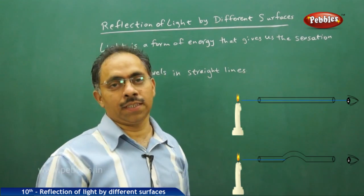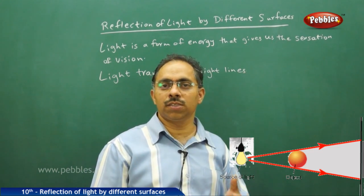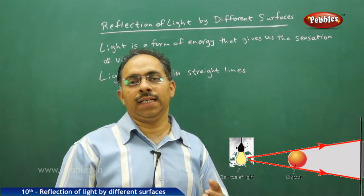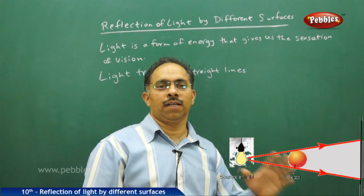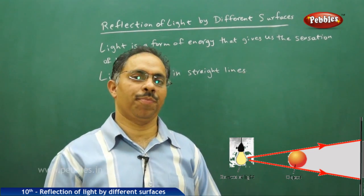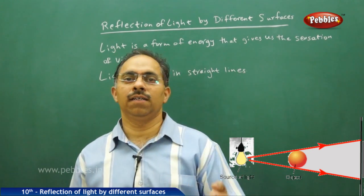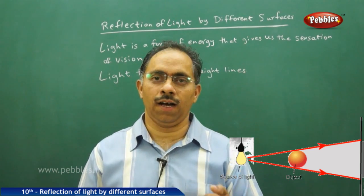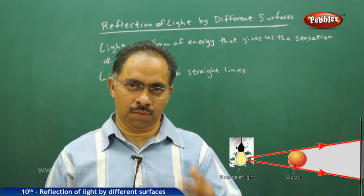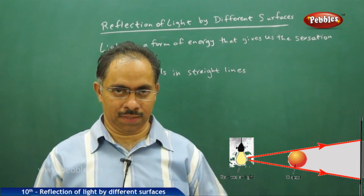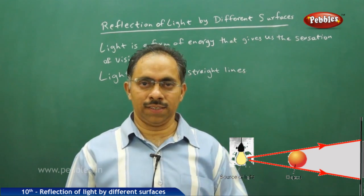According to Fermat's principle, light always travels in straight lines. It is based on this property that we understand shadows — shadows are formed because light is obstructed by opaque objects. When light is incident on a body, three things can happen: the body can allow the light to pass through it, or it can bounce back into the same medium, or it can absorb and transmit.